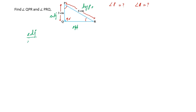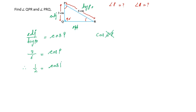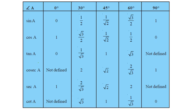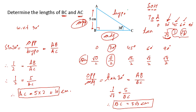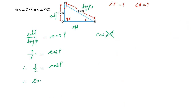With respect to angle P, adjacent side is given and hypotenuse is given. The ratio of adjacent divided by hypotenuse is cosine. So let's write cos P — don't write 'cos angle P', just write cos P. Adjacent side is 3 and hypotenuse is 6, so cos P equals 3/6, which simplifies to 1/2. Looking at the trigonometric table, cos equals 1/2 at 60 degrees, so cos 60° = 1/2.